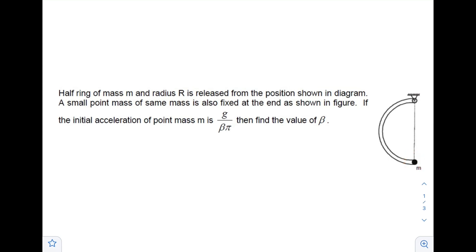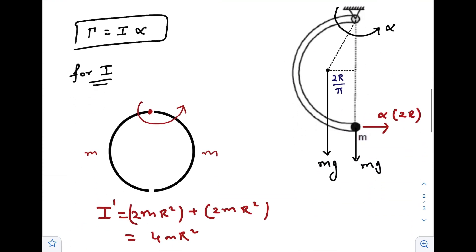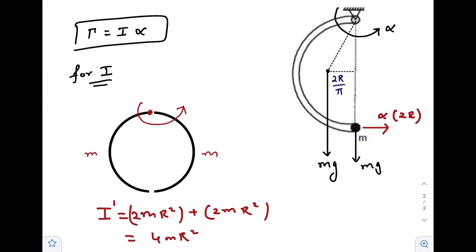For that we need to find out the angular acceleration first, so let us check out the solution. As you can see, this is a semicircular ring whose center of mass lies at a distance 2R by pi from the origin, the geometric center.